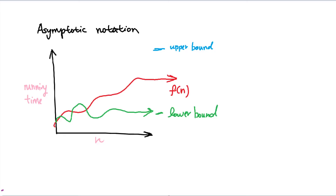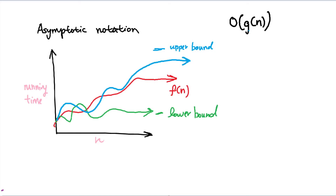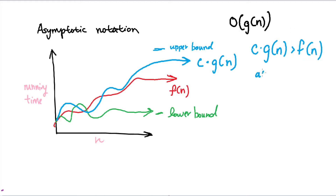We can begin considering types of notation. We'll start with the upper bound, which we'll call big O of some function g of n. This is not a formal definition, but what big O of g of n essentially says is that for some constant c, multiplied by your given function g of n, it's going to be greater than f of n as n approaches infinity — thus forming an upper bound.